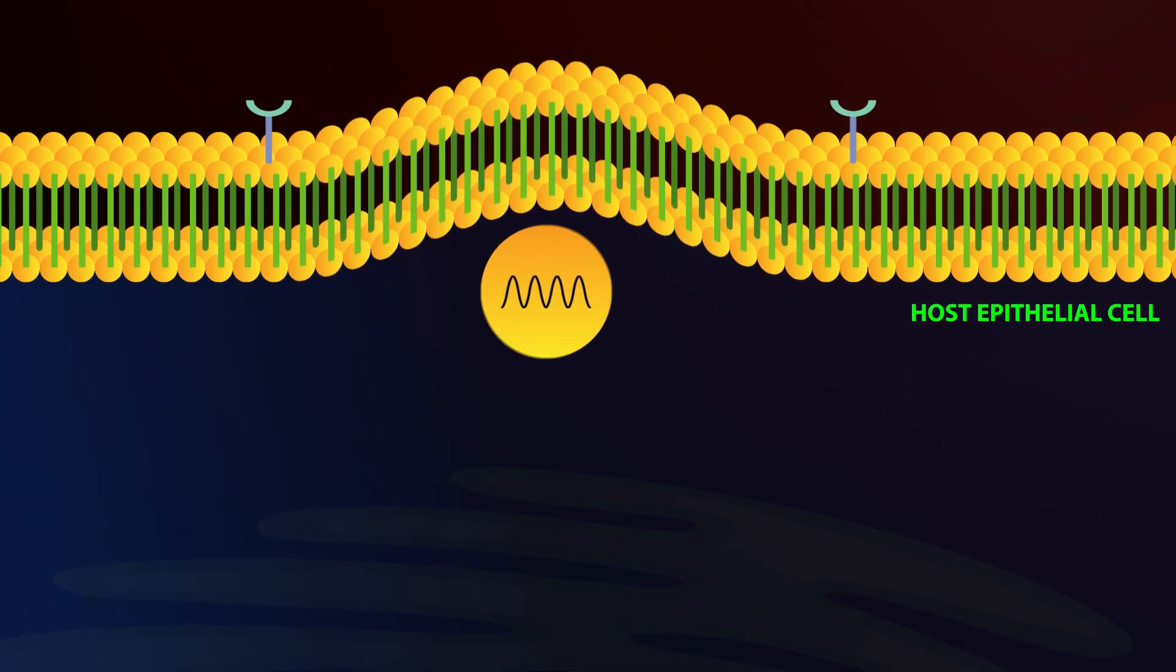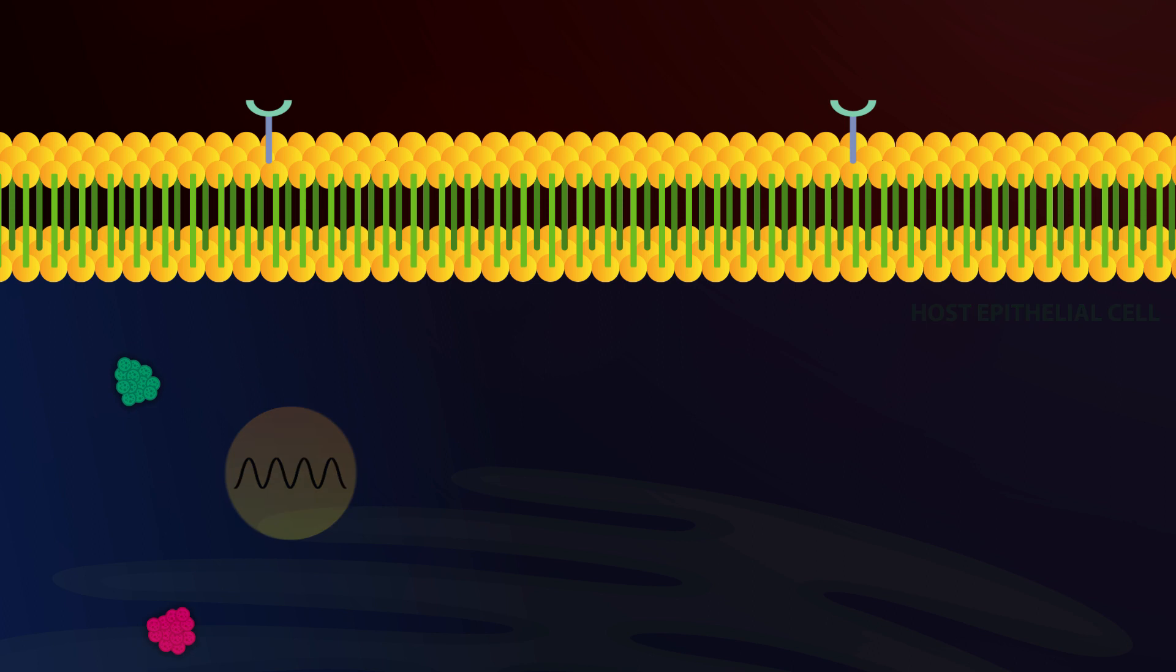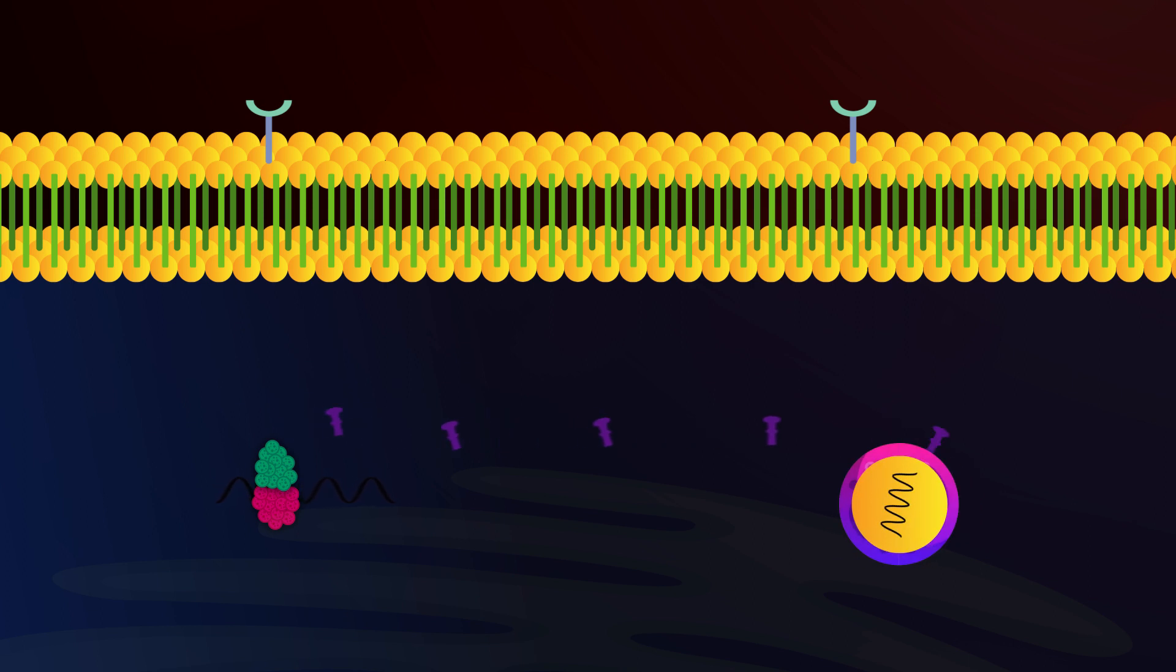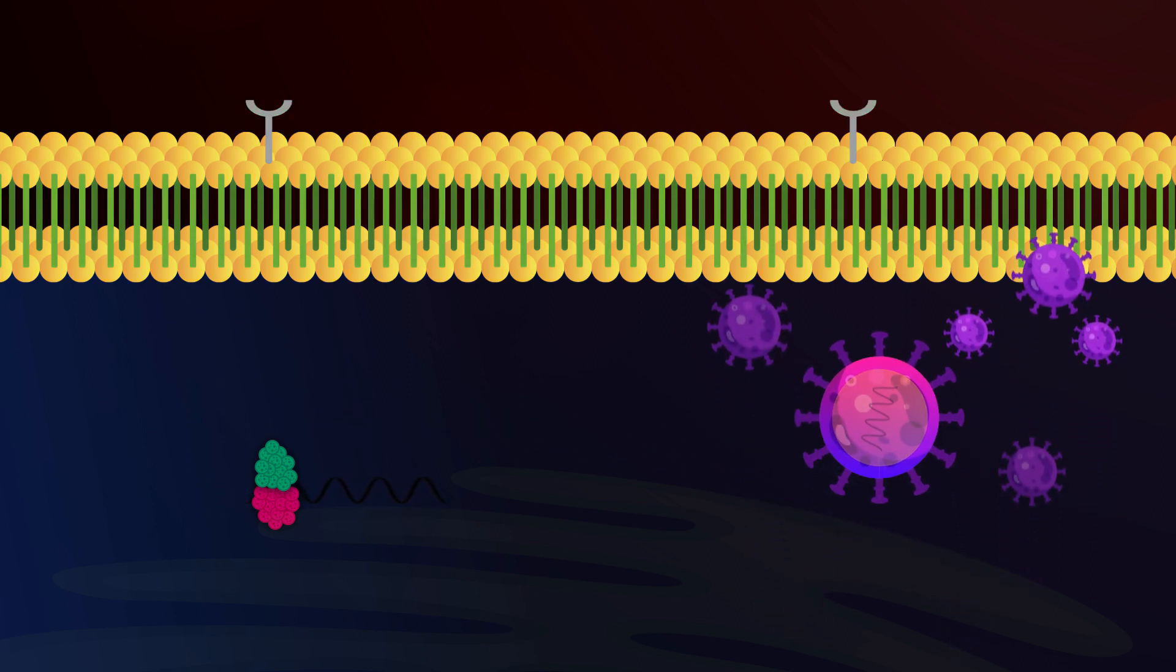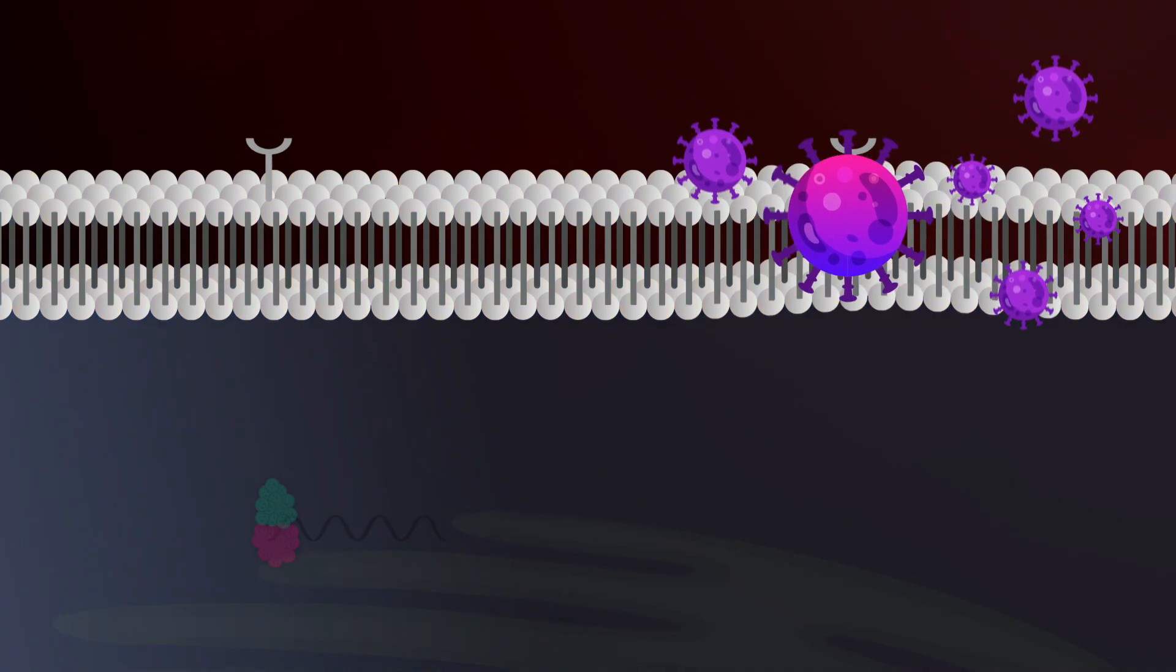So once inside, like a Trojan horse, the virus then hijacks and transforms the cell into a viral protein-making factory. The infected cells now serve the virus, synthesizing thousands and thousands of viral proteins and assembling them, which are later then released to enslave more cells and continue the process.